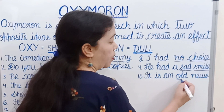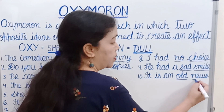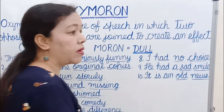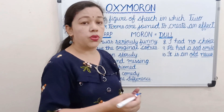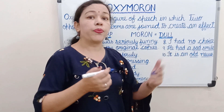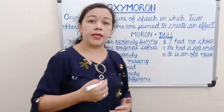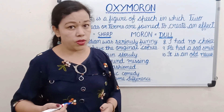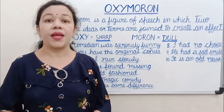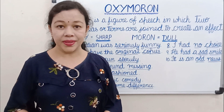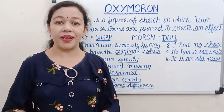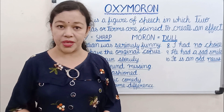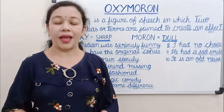Next: 'It is old news.' Old and news are opposite — news means something which is latest or new, so old and new are both together in a sentence, making it an oxymoron. I hope you have understood. Keep watching my channel and please subscribe for more figures of speech. Thank you very much.